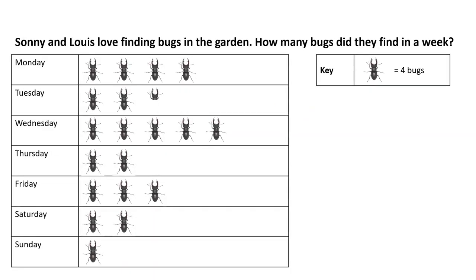We've jumped into PowerPoint and we've got this slide here for a maths lesson. The question is: Sonny and Louie love finding bugs in the garden — how many bugs did they find in a week? We've got the days of the week down the left-hand side and bug symbols, where each bug image is worth four bugs.